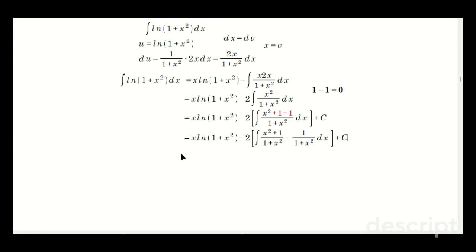Now this first piece is just 1, it's a thing divided by itself, so it's going to be x ln(1+x²) minus 2, minus 2, so it's 1 minus 1 over 1+x² dx plus c.